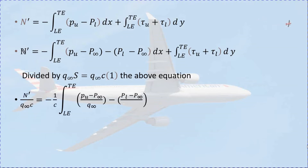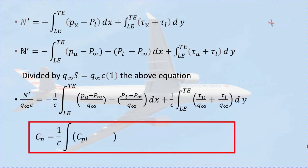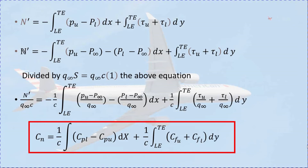q is the dynamic pressure and the surface area is defined by chord length times unit span. Dividing by q_infinity times c: N prime divided by q_infinity times c equals minus 1 over c times the integral from leading edge to trailing edge of (P_U minus P_infinity)/q_infinity minus (P_L minus P_infinity)/q_infinity dx, plus 1 over c times the integral from leading edge to trailing edge of tau_U/q_infinity plus tau_L/q_infinity dy. Finally, the coefficient of normal force equals 1 over c times the integral of (C_p_lower minus C_p_upper) dx, plus 1 over c times the integral of (C_f_upper plus C_f_lower) dy.